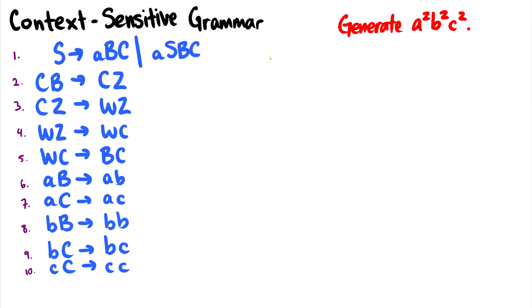So let's generate A² B² C². We'll start with S, our start symbol. The first thing we'll do is change S into ASBC. And now we're going to use S again, except this time we'll convert it into just ABC. So we'll be left with A, S will change into ABC, and then we're left with BC from before.